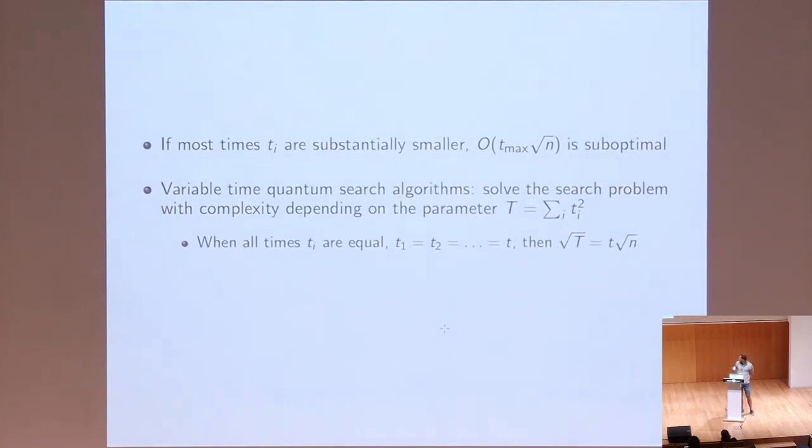So can we do better? This is where variable time search algorithms step in. They try to solve this search problem in time which depends on this quantity, sum of squared individual times. Using square root of capital T means that instead of this maximal time, we use the quadratic average of all the individual running times.